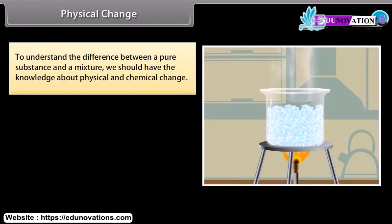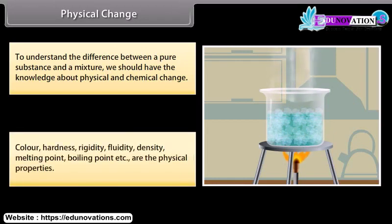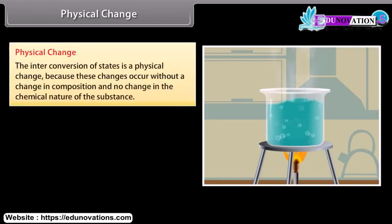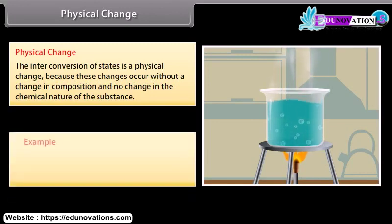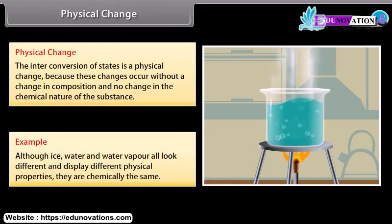To understand the difference between a pure substance and a mixture, we need knowledge of physical and chemical change. Color, hardness, rigidity, fluidity, density, melting point, and boiling point are physical properties. The inter-conversion of states is a physical change because these changes occur without a change in composition and no change in the chemical nature of the substance. For example, although ice, water, and water vapor all look different and display different physical properties, they are chemically the same.